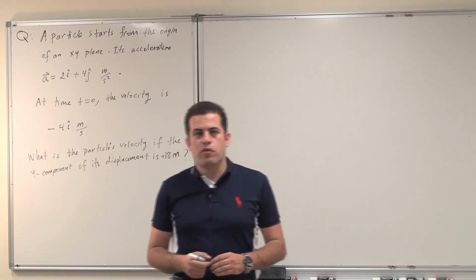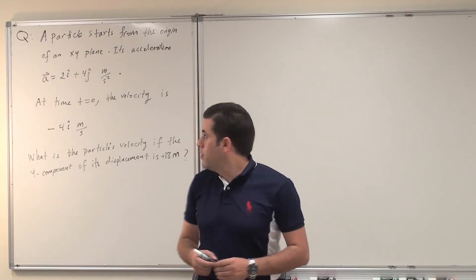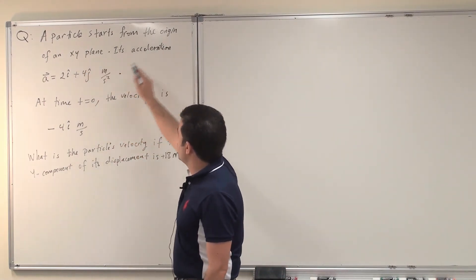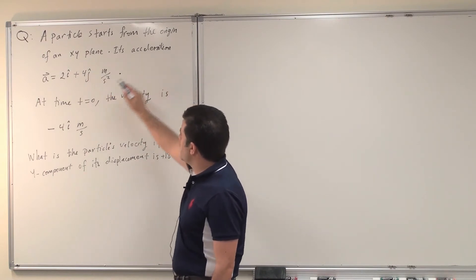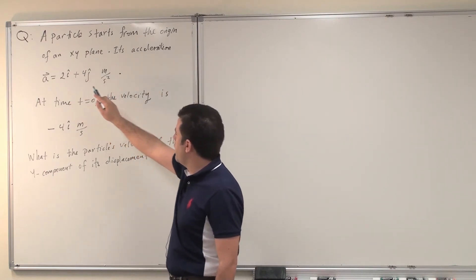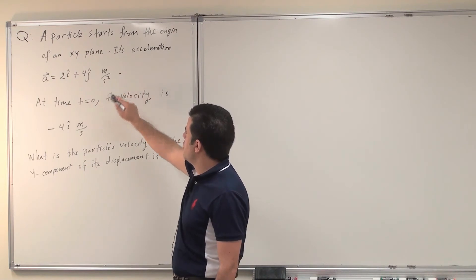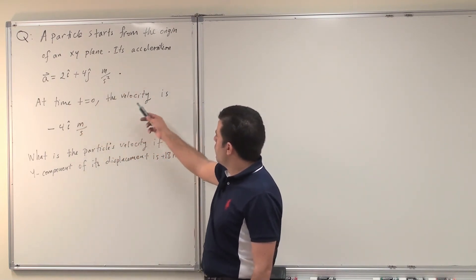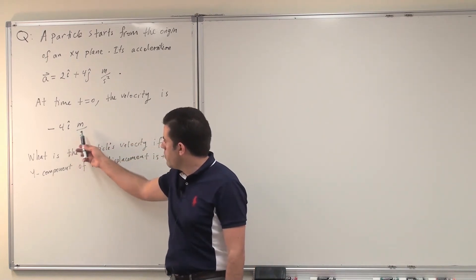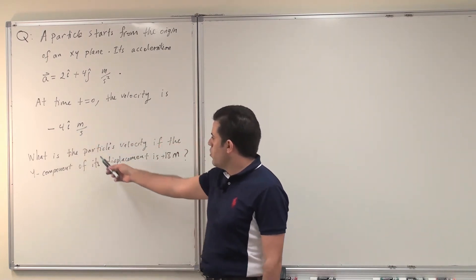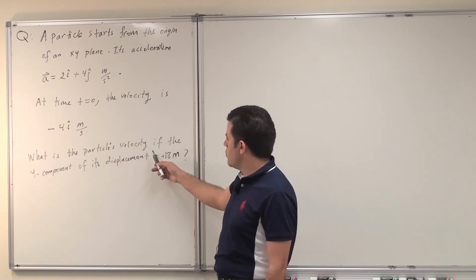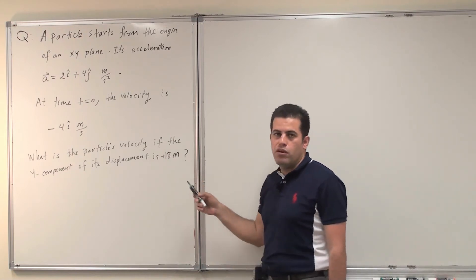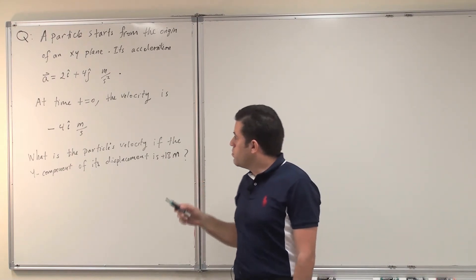As-salamu alaykum. Today we're solving questions from chapter 4. The question reads: a particle starts from the origin of an x-y plane. Its acceleration is 2i-hat plus 4j-hat meters per second squared. At time t equals 0, the velocity is minus 4i-hat meters per second. What is the particle's velocity if the y-component of its displacement is plus 18 meters?